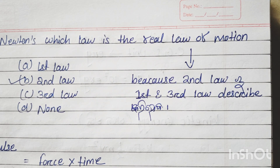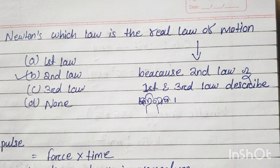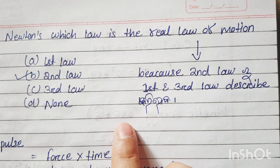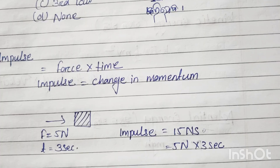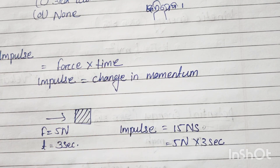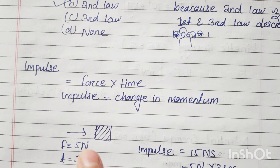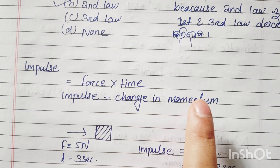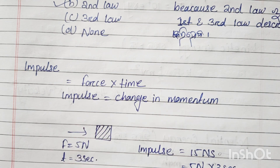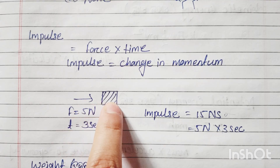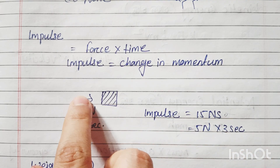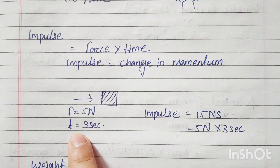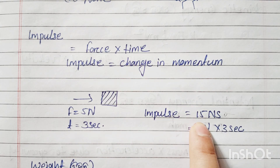Newton's Second Law is considered the real law of motion because it encompasses the first and third laws. Impulse equals force into time, and impulse equals the change in momentum. For example, if force is 5 Newtons and time is 3 seconds, impulse is 5 × 3 = 15 Newton-seconds.